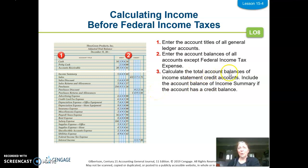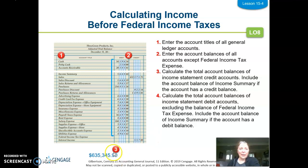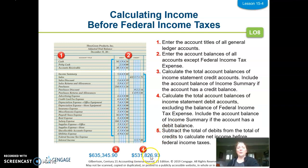The third step is calculating the total account balances of income statement credits. We're not making sure our trial balance equals yet — we're just using this to come up with income. From income summary on down are the income statement accounts. So we're totaling just these four credits, and when I add them up I get $635,345.90. Then I'm going to total all the debits from income summary on down, and I get $531,826.93.